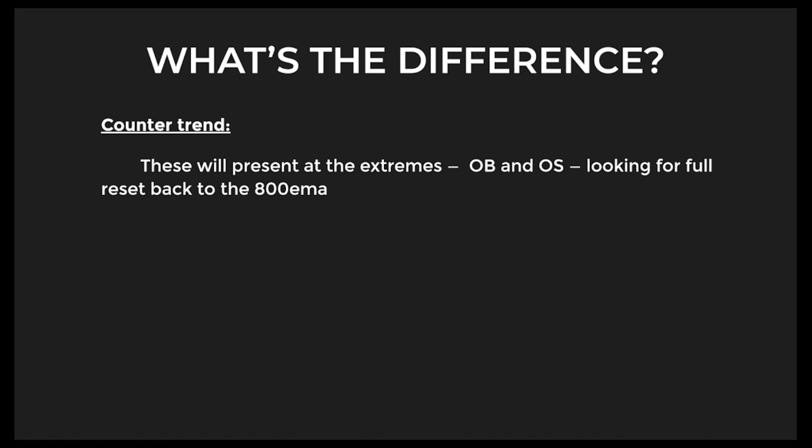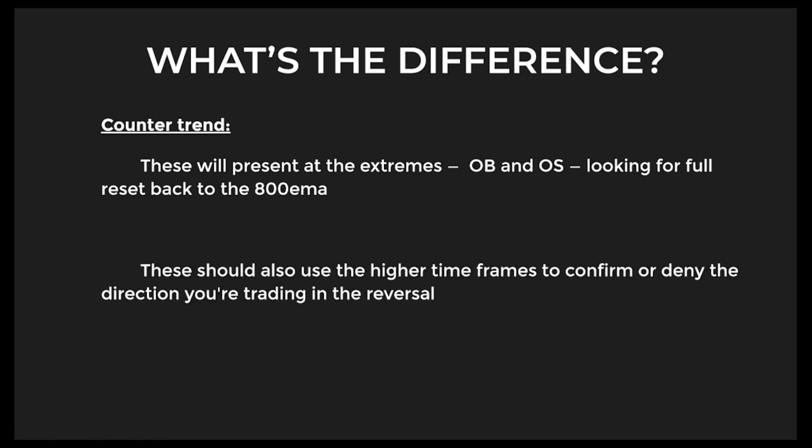Flip this and look at the counter-trend. The D2 is going to present at the extremes — the overbought, the oversold, the maxed out ADR, yesterday's high, yesterday's low — and you're looking for it to go full reset, back to the 800 EMA. So you're trading back in the direction of the EMAs when talking about the D2 entry.